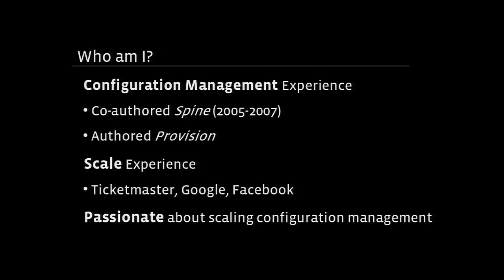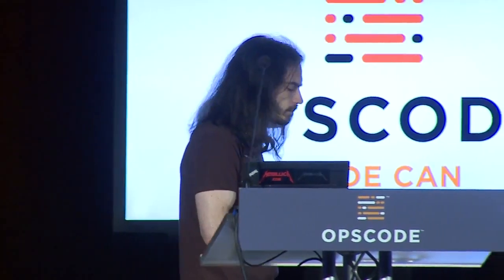When it comes to configuration management, in the early to mid-2000s I worked at Ticketmaster, and we wrote a piece of software called Spine, which was a response to CFEngine 2 because we didn't want to use it — it wasn't flexible enough for a fairly large dynamic environment. I also wrote a piece of software called Provision, which would allocate VMs and other resources, filer space, and that sort of stuff needed to get a system up and running that could run Spine.